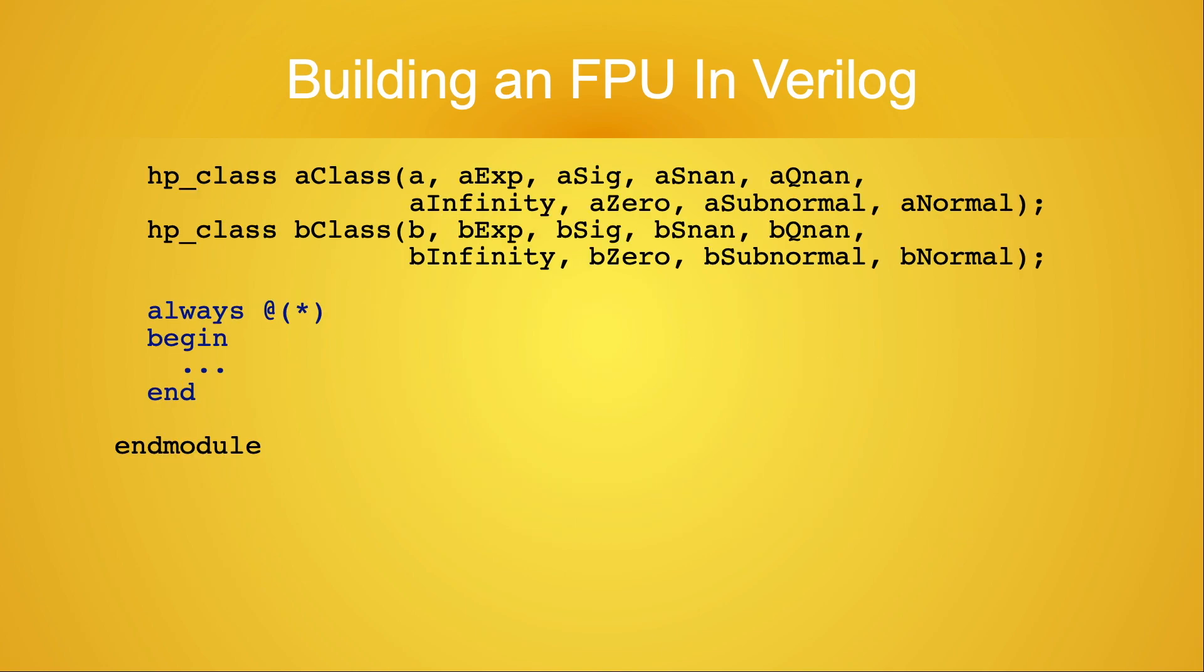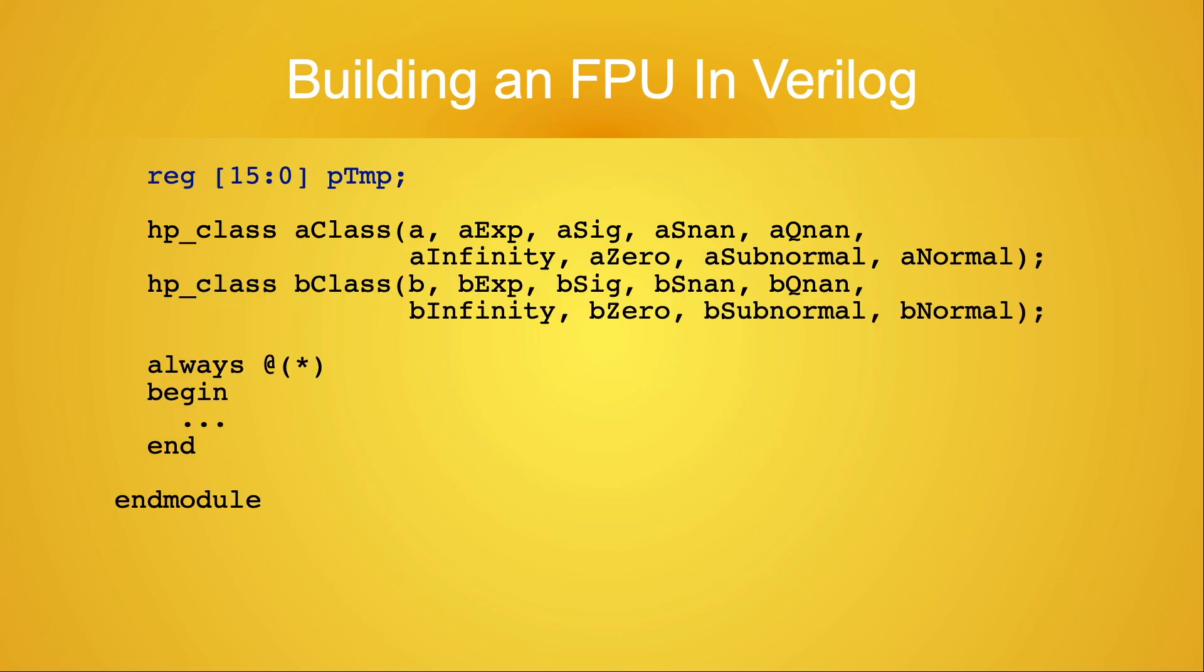After determining the value types for the two input values, there is an always block. If you're new to Verilog, the at parentheses asterisk expression is the sensitivity list for the always block. I've used a wildcard, the asterisk, so if any of the input values changes, the always block recomputes all the values in the block.